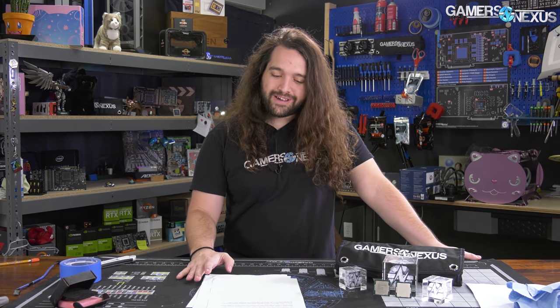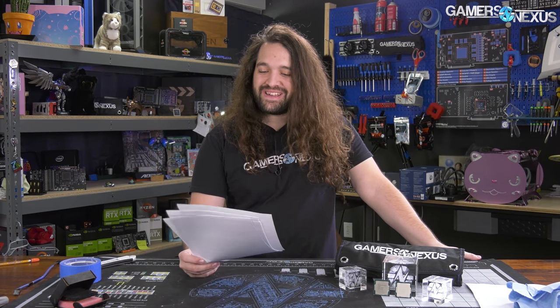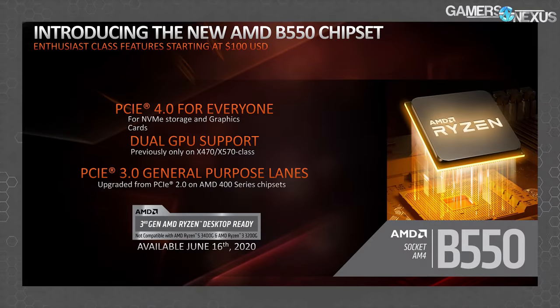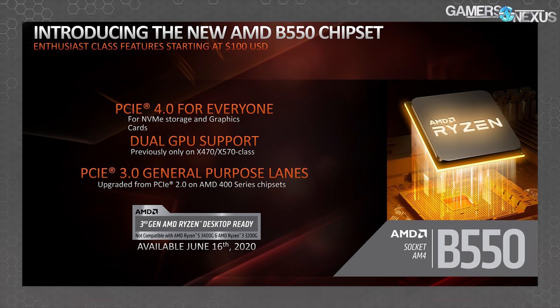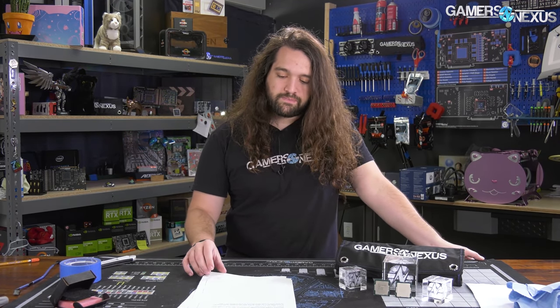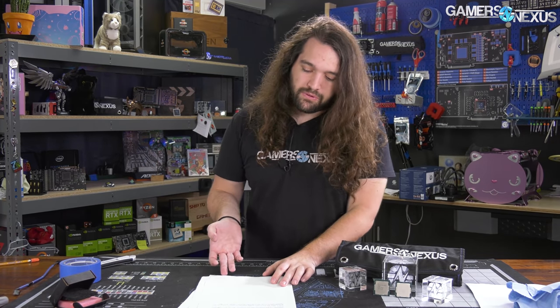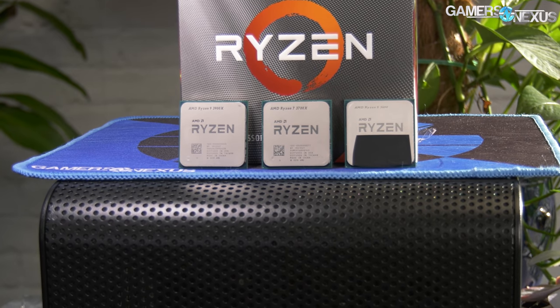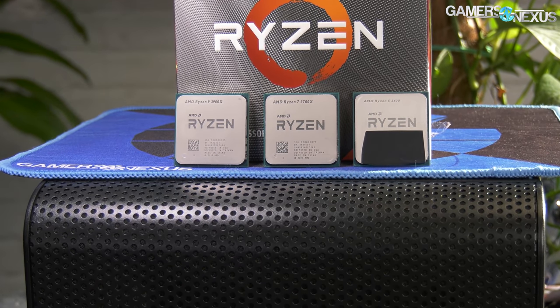B450 boards didn't technically support dual GPU — you'd probably never know because no one actually uses it anymore, which we miss. B550 will support dual GPUs, for whatever that's worth. Based on AMD's slide deck to media, the B550 chipset will not officially support the 3000 APUs, so don't buy a B550 board planning to use it with a 3000G, 3200G, or 3400G APU. We don't know what will happen with next-generation APUs. And Zen 3 — not to be confused with Ryzen 3000 — we've gone over that enough at this point.